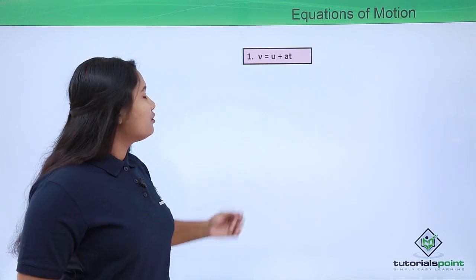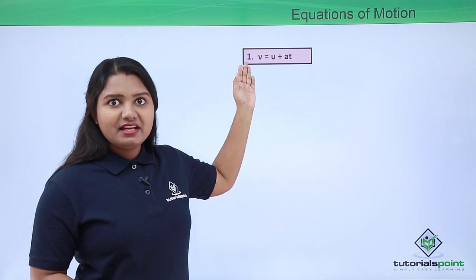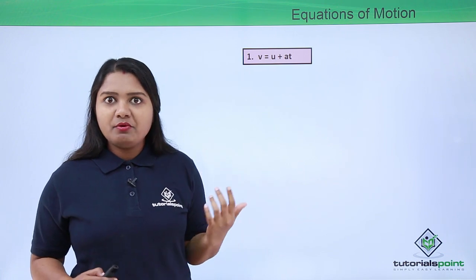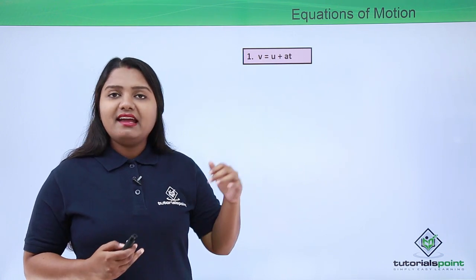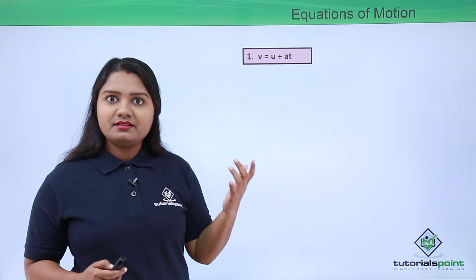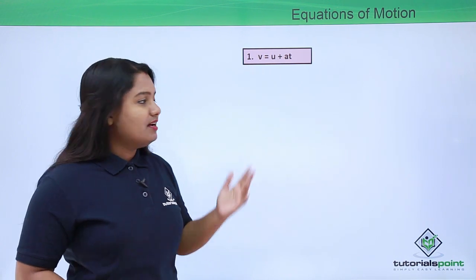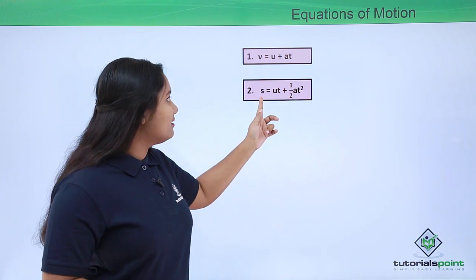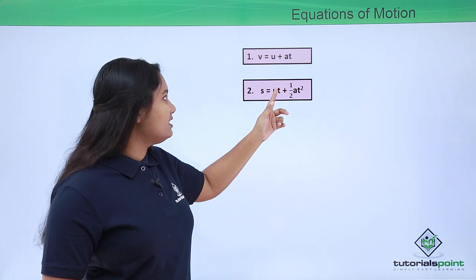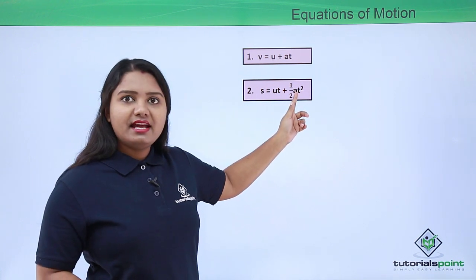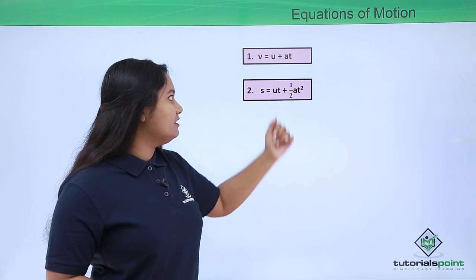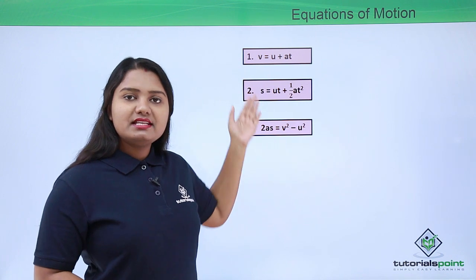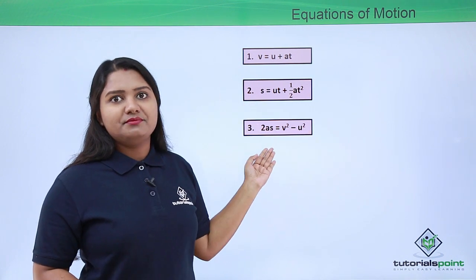The first equation of motion is v equals u plus at, where v is final velocity, u is initial velocity, a is acceleration, and t is time taken. The second equation is s equals ut plus half at squared, where s is displacement. The third equation of motion is 2as equals v squared minus u squared.